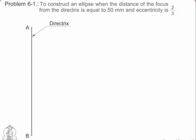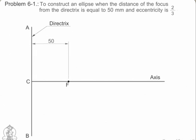Draw any vertical line AB as directrix. At any point C on AB, draw the axis perpendicular to the directrix. Mark the focus F on the axis such that CF equals 50mm.